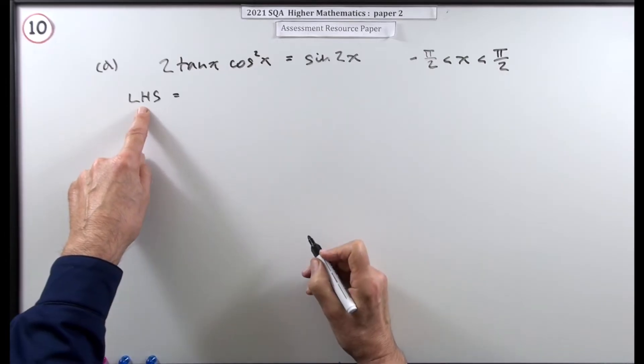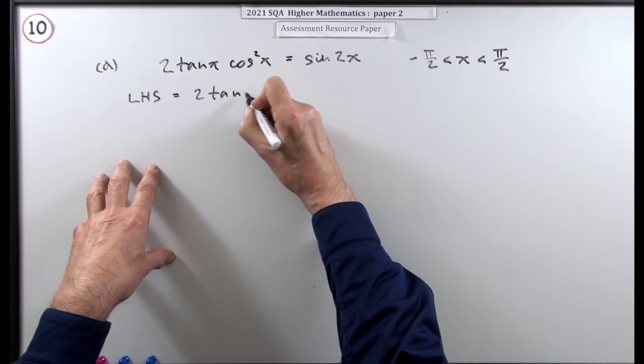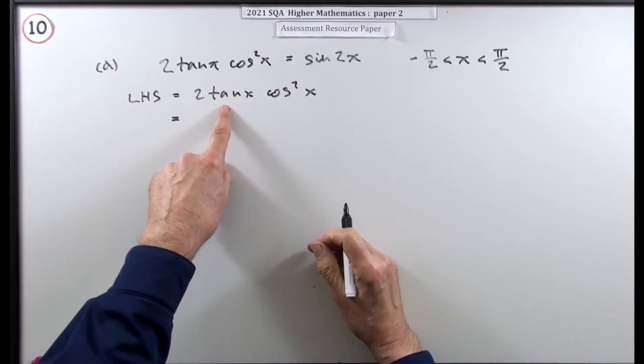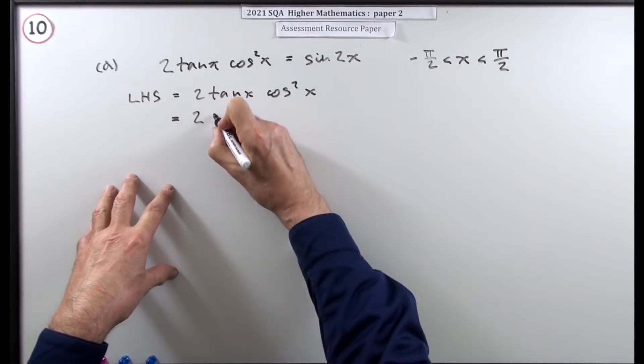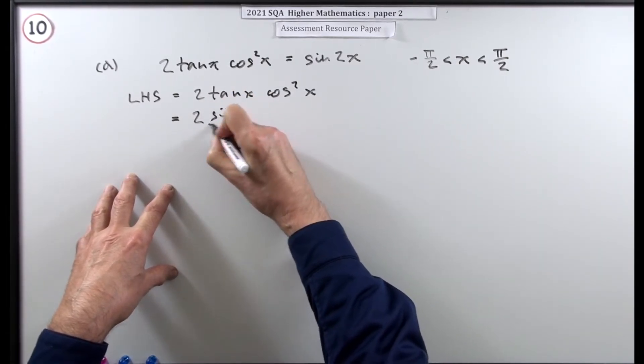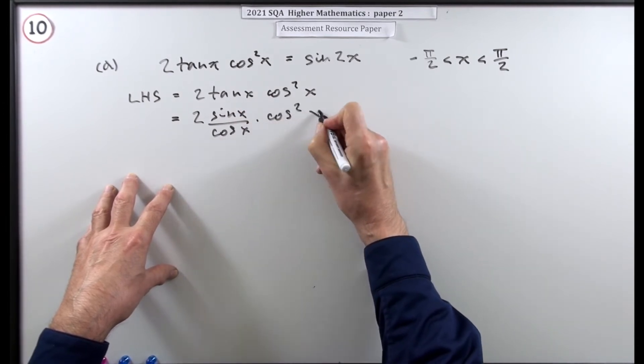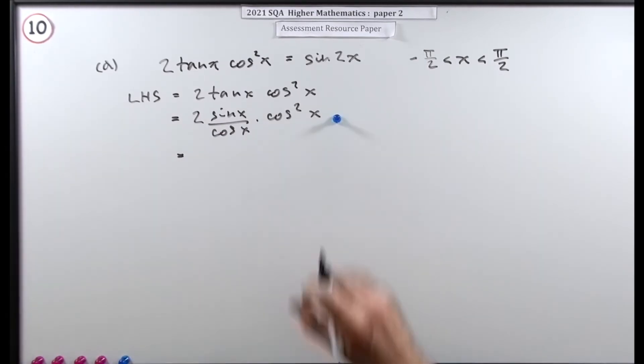So start with the left hand side to turn it into the right hand side. If I start with 2 tan x cos squared x, there's no mention of tan here, so the first thing I'll do is get rid of that tan. That can get replaced by sin x over cos x, multiplied by cos squared x. And I think doing that is worth a mark.